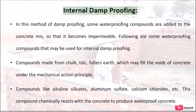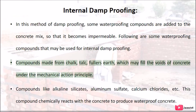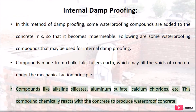Internal damp proofing: in this method, waterproofing compounds are added to the concrete mix so that it becomes impermeable. The following compounds may be used: compounds made from chalk, talc, and fuller's earth, which fill the voids of concrete under the mechanical action principle; compounds like alkaline silica, aluminum sulfate, calcium chlorides, etc., which chemically react with the concrete to produce waterproof concrete.